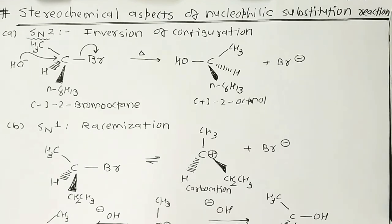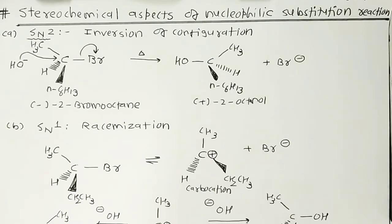Hello students. Continuing our topic on nucleophilic substitution reactions — since the last two or three sessions, we know that haloalkane and haloaryl compounds mostly give three different types of reactions: nucleophilic substitution reactions, elimination reactions, and reactions with metals. Currently, we are focused on nucleophilic substitution reactions — what nucleophiles attack haloalkane compounds, the mechanism of SN1 and SN2, and today we focus on the stereochemical aspect.